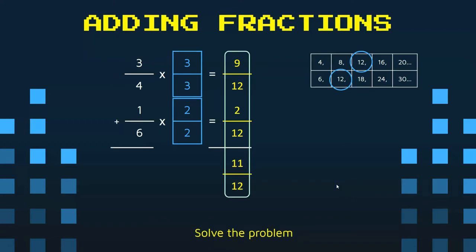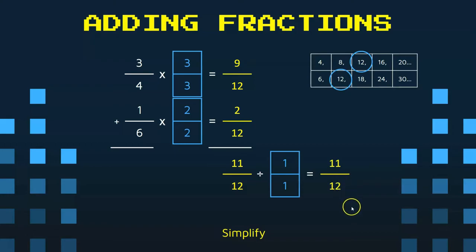Now we're ready to solve the problem. Nine twelfths plus two twelfths is eleven twelfths. We need to simplify. I can see that 11 and 12 are consecutive numbers. Therefore, it is a simplified fraction.